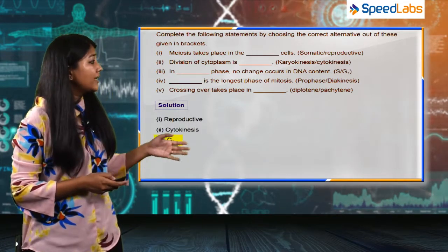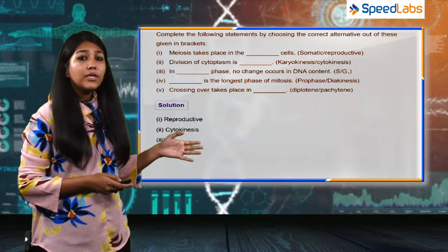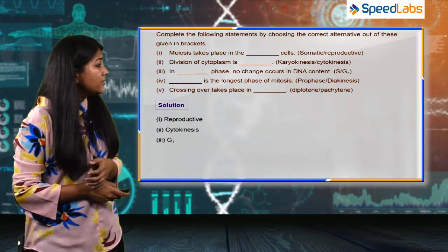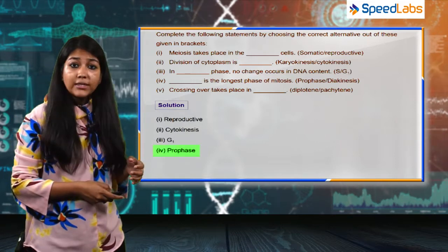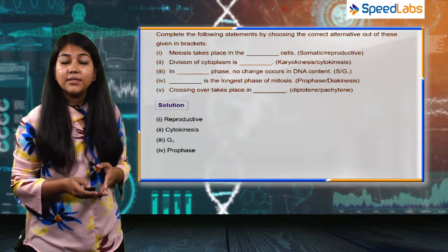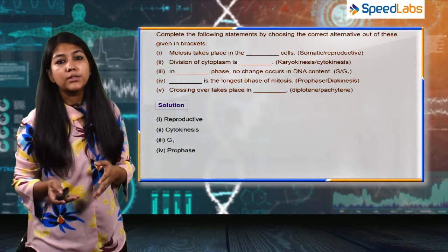Moving on to the next part of this question: blank is the longest phase of mitosis. The answer to this question is prophase, because the other option, diakinesis, is a part of meiosis cell division.